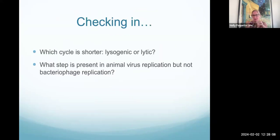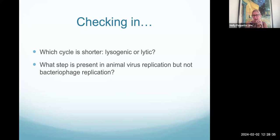I'll let you pause here for the check-in. Which cycle is shorter, lysogenic or lytic? The lytic cycle is shorter because it goes directly to replication, assembly, and release. What step is present in animal virus replication but not bacteriophage replication? Uncoating — because the animal virus brings its capsid into the host cell, while bacteriophages do not. If you have any questions, please let me know. Thank you.